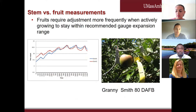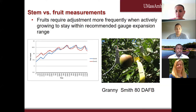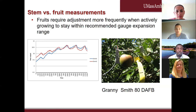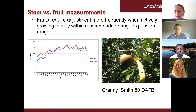Another issue disqualifying fruit as a stress measurement is that during the active growth period, the expansion of the fruit may be too large. Each dendrometer has a specific expansion range, and when the fruit expands beyond this range, the graph could potentially flatten off — which could be mistaken for stress. If you're using fruit for water stress monitoring, you have to be constantly adjusting your dendrometers during the season, making them more tedious to use compared to the stem, which doesn't grow by as much.